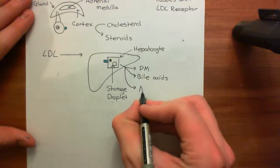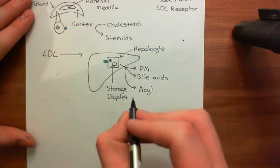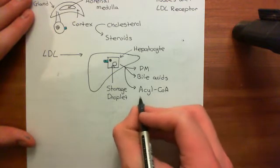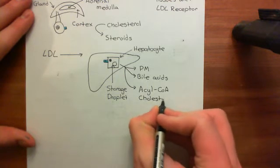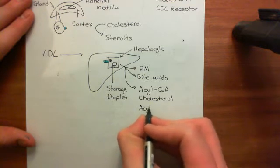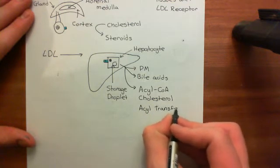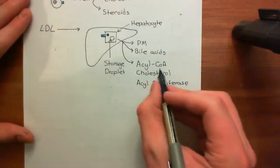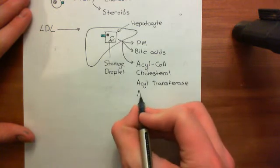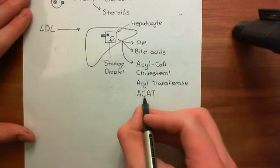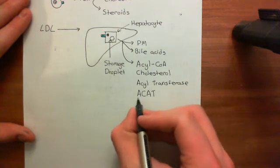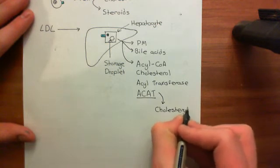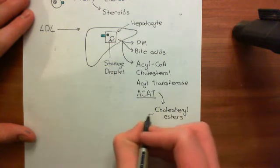There is a special enzyme within liver cells which adds long-chain carboxylic acid onto cholesterol molecules and therefore synthesizes cholesterol esters. This is known as acyl-CoA cholesterol acyltransferase, often abbreviated to ACAT — A for acyl-CoA, C for cholesterol, A for acyl, and T for transferase. ACAT will convert the cholesterol back into cholesterol esters, and then the cholesterol esters can be stored in storage droplets within the cytoplasm of the hepatocyte.